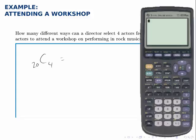I'll just use the built-in function on the calculator, so I type in N, go to the math probability menu, select number 3, nCr, 4.